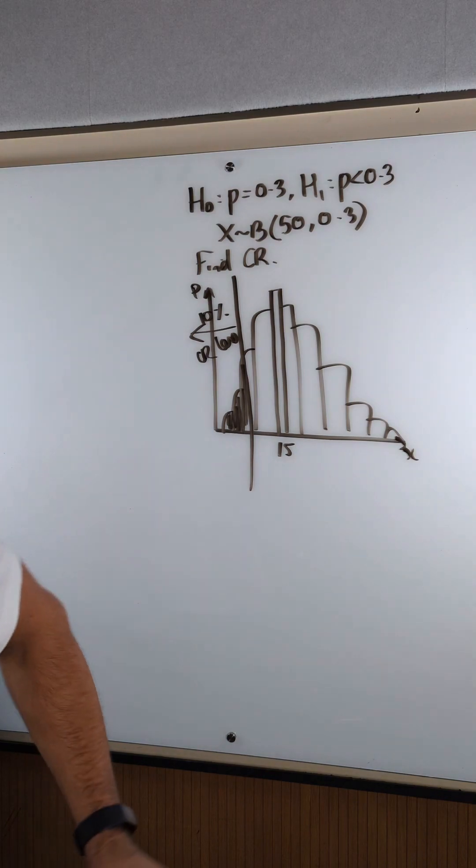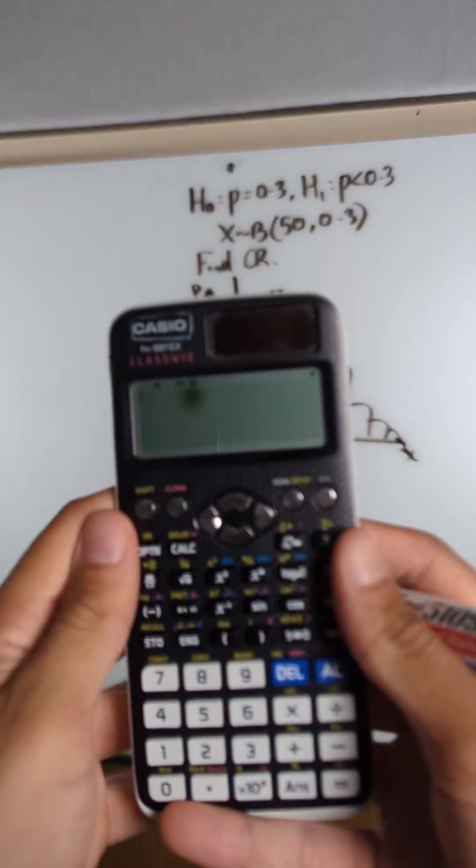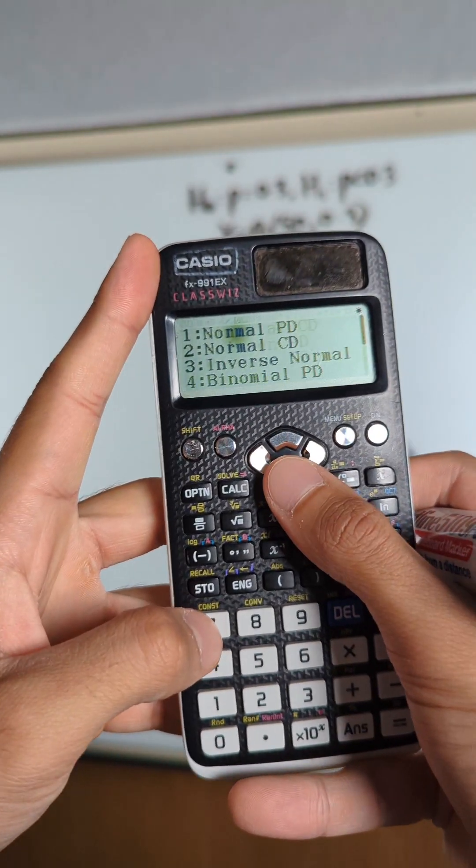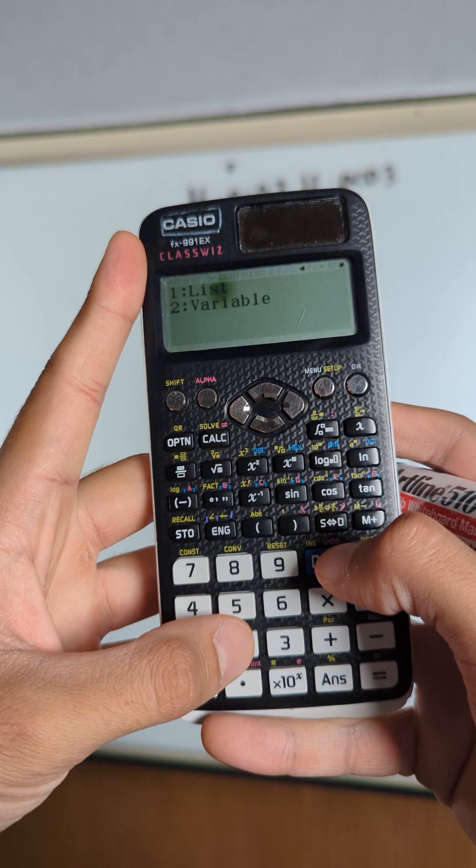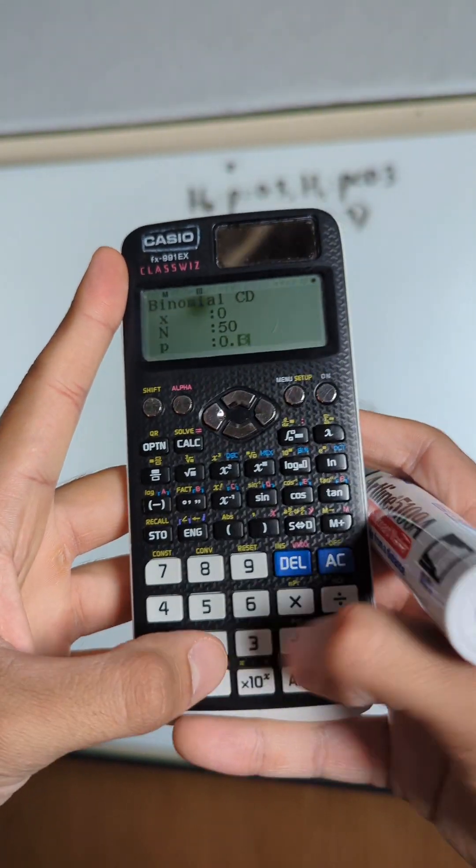So basically we're just going to - I'll show you guys again, a little POV. So here's your calculator. You're going to go shift, you're going to go 7, you're going to go to binomial CD. It's a cumulative distribution. You're going to go variable. N was 50, P is 0.3.